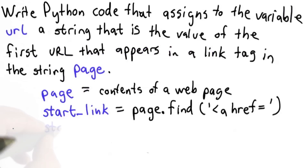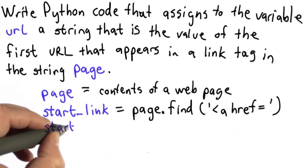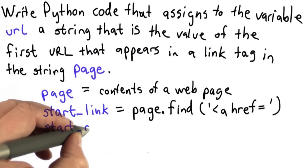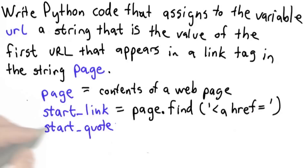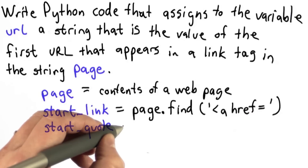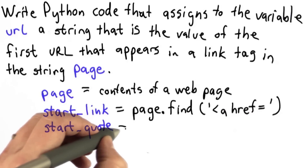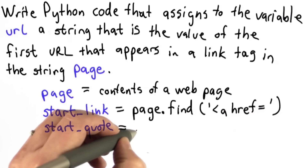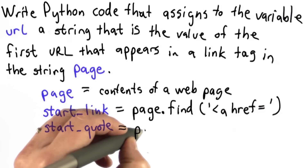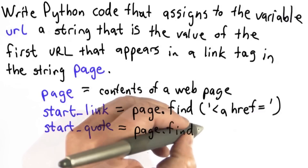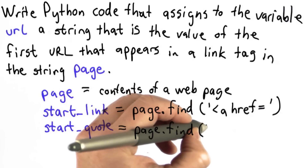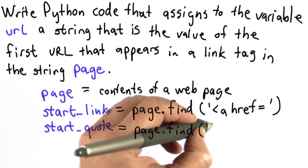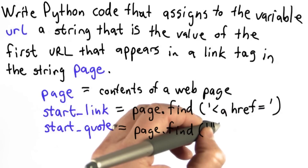Here's how we need to do that. We're going to initialize the variable start_quote, which is where the double quote that starts the URL is. What we want to do is use page.find to find in page. The string we want to find is that double quote. To make a double quote as a string, we need to use a single quote followed by a double quote followed by a single quote.